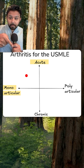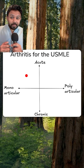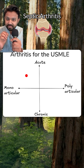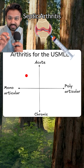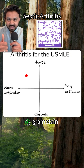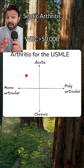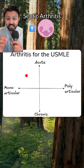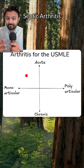Quadrant number one is acute monoarticular. This is going to be a patient who may have septic arthritis. Remember that the next best step in management is going to be an arthrocentesis. You're going to see a positive gram stain, and in the vignette, a WBC count greater than 50,000 with a preponderance of neutrophils. Typically, this is going to be due to staph or Neisseria.